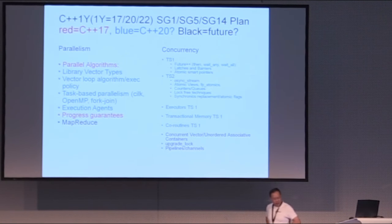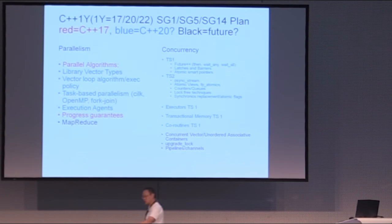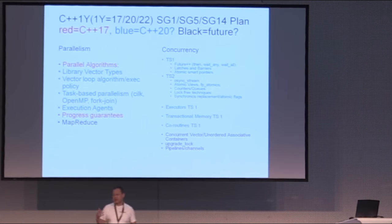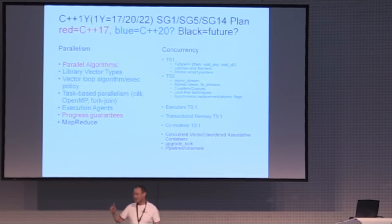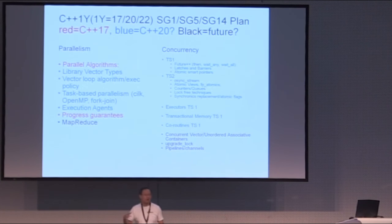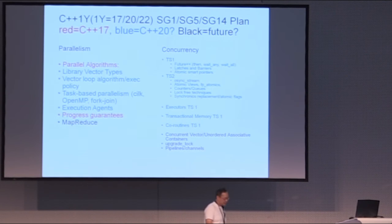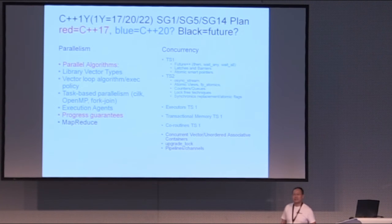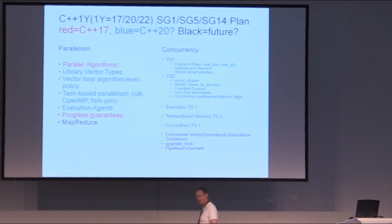The concurrency side has two TSs potentially in the pipeline. TS1 is already written and published — it has future++, then-continuation style programming, wait_any, wait_all, latches, barriers, and atomic smart pointers. TS2, which we discussed in Issaquah last week, will add things like the ability to synchronize streams, because in a concurrency context, output to a stream can appear in different orders if you don't synchronize.